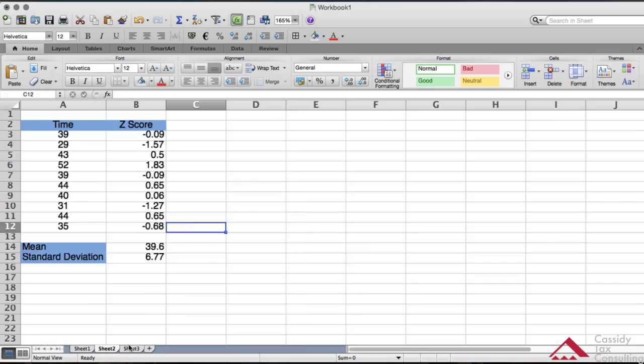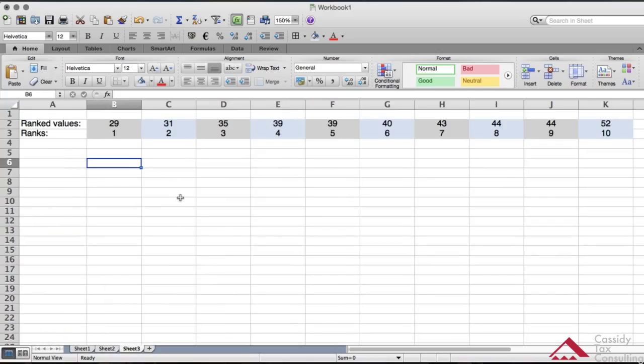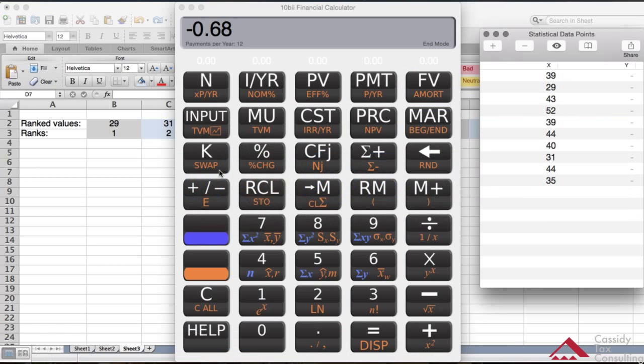In order to get the rank value for the first quartile, the total is 10, so it's going to be 10 plus 1 divided by 4 to get the first quartile. So let's bring up the calculator here.